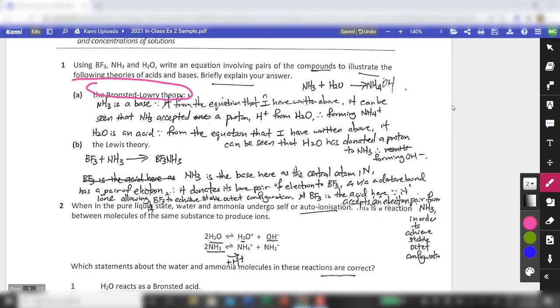For 1B, it will be the Lewis acid-base theory. So if you look at the three compounds given to you, you have BF3, ammonia, and H2O.